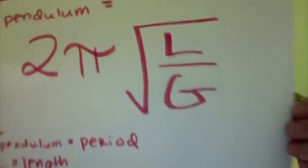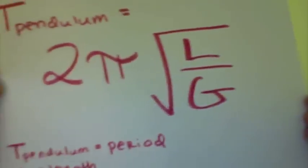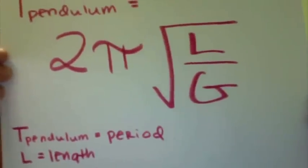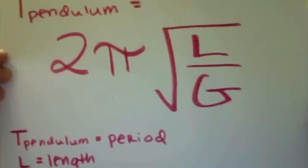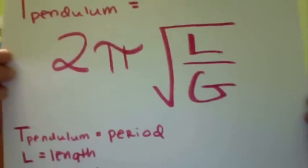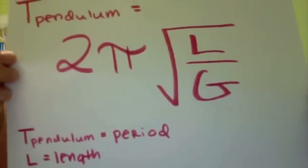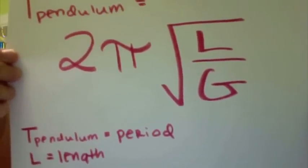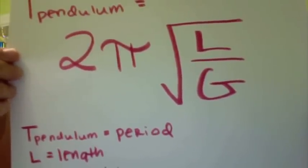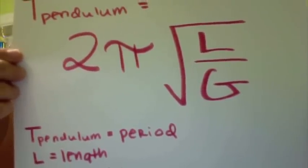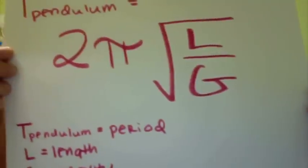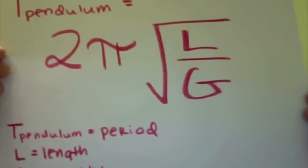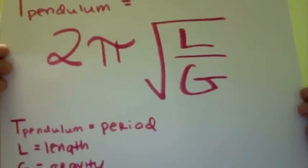This is the equation to calculate the period of a pendulum. You have T pendulum — T being the period — equals two pi times the radical of length over gravity. Gravity on Earth would be 9.8.